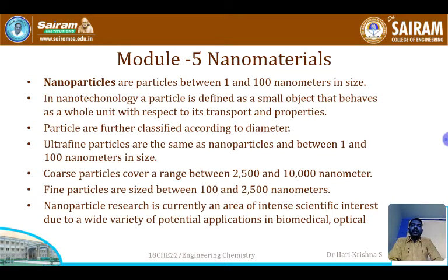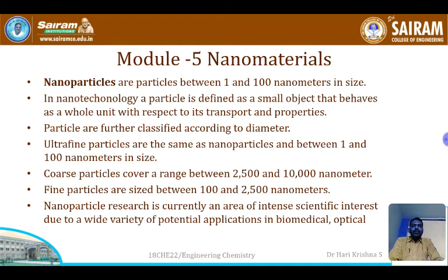Now let us look at how nanoparticles are synthesized and the different methods of synthesis. Nanoparticles are substances whose size varies between 1 to 100 nanometers. As the diameter changes, they are classified into different forms. Particles sized 1 to 100 nanometers are called ultrafine particles; 100 to 2500 nanometers are called fine particles; and 2500 to 10,000 nanometers are called coarse particles.